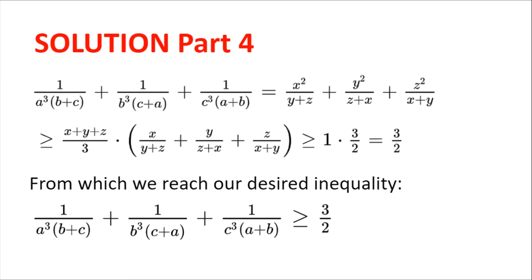So to round up what we've just looked at, we rewrote 1 divided by a cubed times (b plus c), plus 1 divided by b cubed times (c plus a), plus 1 divided by c cubed times (a plus b) as x squared divided by (y plus z), plus y squared divided by (z plus x), plus z squared divided by (x plus y), which was greater than or equal to (x plus y plus z) divided by 3, times (x divided by (y plus z) plus y divided by (z plus x) plus z divided by (x plus y)) by Chebyshev's, which is then greater than or equal to 1 multiplied by three halves by AM-GM and Nesbitt's, which equals three halves.